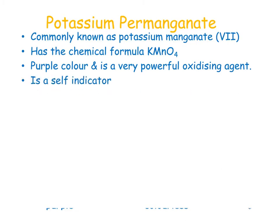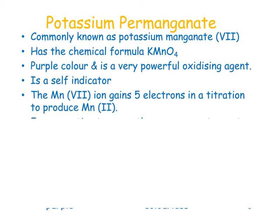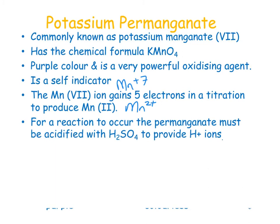Potassium permanganate is a self-indicator, so in a titration you don't need an additional indicator. It changes color from purple to colorless when acting as an oxidizing agent. The Mn⁷⁺ ion gains five electrons to produce Mn²⁺. Since it is gaining electrons, it is being reduced, making it an oxidizing agent. For the reaction to occur, the permanganate must be acidified with sulfuric acid to provide H⁺ ions.